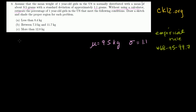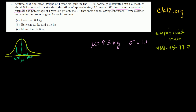What the empirical rule tells us is: if we have a normal distribution — let me draw one — it should be symmetrical, with the mean right in the center. If we go one standard deviation above and one standard deviation below the mean, the probability of finding a result between those two points is 68%. So there's a 68% chance you'll get something within one standard deviation of the mean, either below or above or anywhere in between.